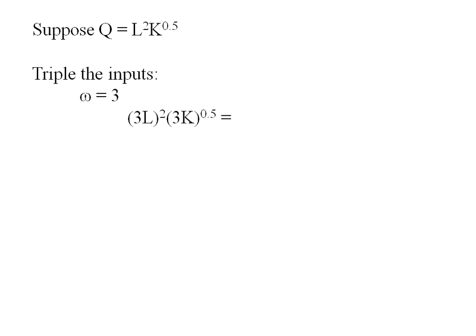So now I need to distribute in my exponents. Bringing the squared term in on the 3 gives me 9, and then L squared. Bringing the 0.5 exponent in on the 3 gives me 1.73, and then it comes in on the capital term. I can take and combine these terms. So the 9 and the 1.73 get multiplied together for 15.57 L squared K to the 0.5.